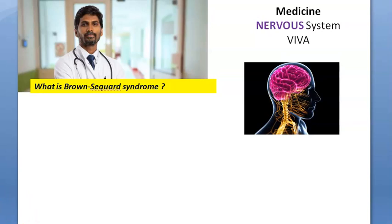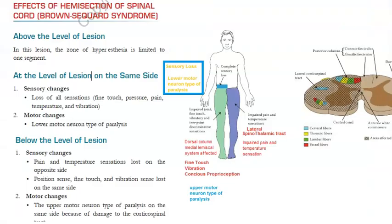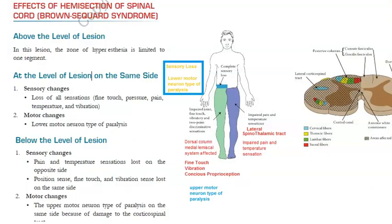What is Brown-Séquard syndrome? Brown-Séquard syndrome is the hemisection of the spinal cord. At the level of the lesion, all sensations are lost. Below the lesion on the same side, position sense, fine touch, and vibration are lost. On the opposite side, pain and temperature are lost. At the level of the lesion, motor function shows lower motor neuron type paralysis, while below the lesion on the same side it is upper motor neuron type.